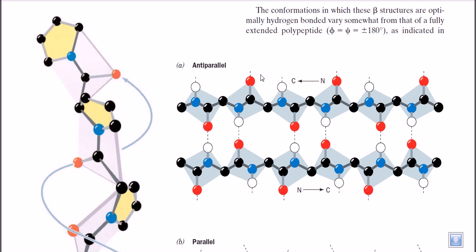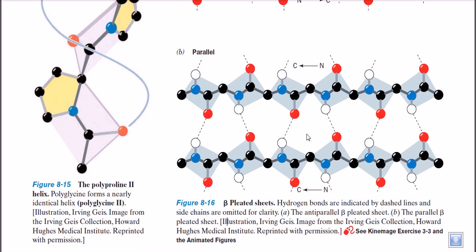We are looking at the anti-parallel orientation of these amino acid sequences. Starting from N to C in one direction, the second strand goes from right to left — so one strand goes left to right, the other right to left. This anti-parallel orientation places the hydrogen and oxygen close to each other, making hydrogen bond formation simple and easy. Anti-parallel orientation is pretty common in globular proteins and is favored over parallel orientation.